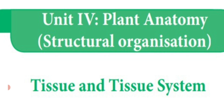In the previous video class, we have seen different topics. That is, what is tissue system? Group of similar cells combined together form a tissue. Group of similar tissues joined together to perform different functions is called tissue system. This tissue system is classified into three types according to SACS: Epidermal Tissue System, Fundamental Tissue System, and Vascular Tissue System.